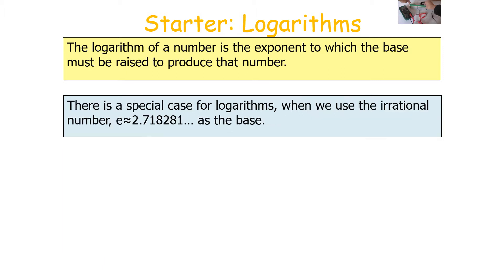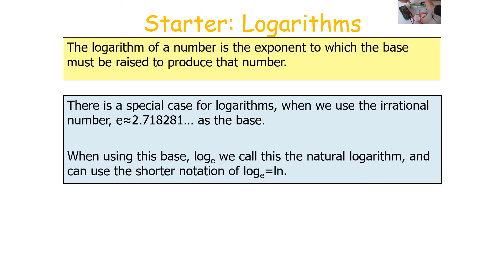There is also a special case for logarithms, and that's when we use the irrational number E, which is 2.718281..., as the base. We use this base, log E, as the natural logarithm, and we shorthand it to LN. So log to the base E is written as LN and said as 'natural log'.